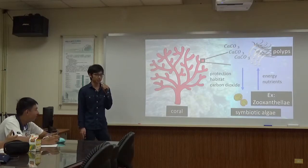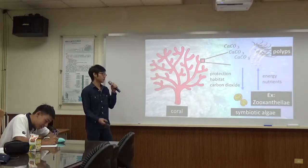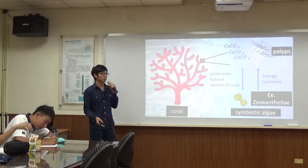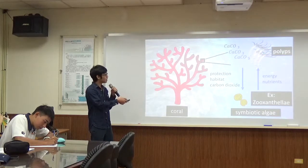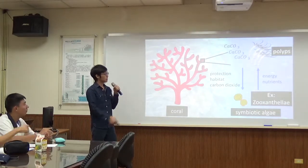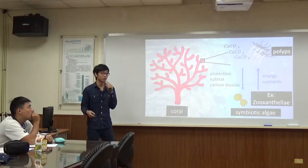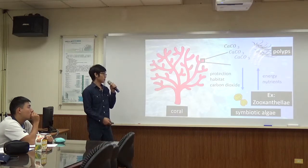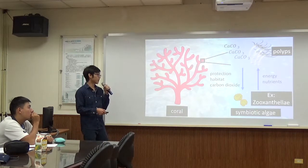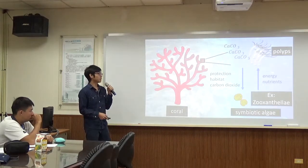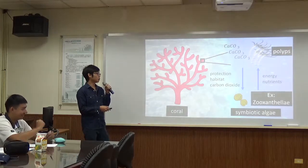First, I want to introduce what is coral. Coral is a marine invertebrate. If you take a coral tissue on a microscope, you can see many tiny animals called polyps. And polyps can secrete calcium carbonate to form a hard skeleton. And there are some single-cell algae that live with coral, and symbiotic algae can provide energy and nutrition to coral.